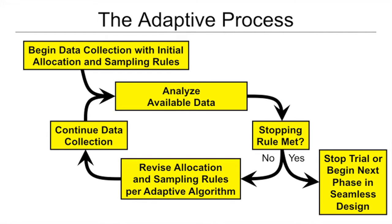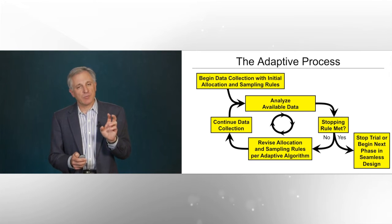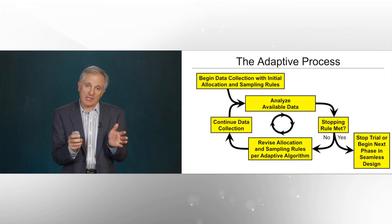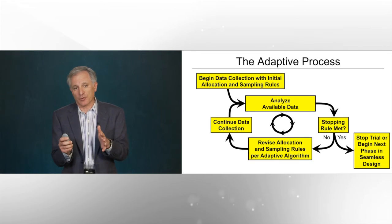This diagram shows the internal process of an adaptive trial. It starts with some initial data collection rules and initial allocation rules. Those determine the randomization proportions between the treatment arms and the number of patients enrolled before we take a first interim look at the data. At the first interim look, we analyze those available data, which will often be incomplete, and ask ourselves whether we have met one of the pre-specified stopping rules for the trial. Assuming we haven't, we use those initial data to revise the allocation and sampling rules using the pre-specified adaptive algorithm and continue the data collection. This continues in a circular motion until we meet one of the pre-specified stopping rules, one of which is always that we have met the maximum allowed sample size for the trial. At that point, we may stop the trial, or we may move to another stage or phase of the trial.